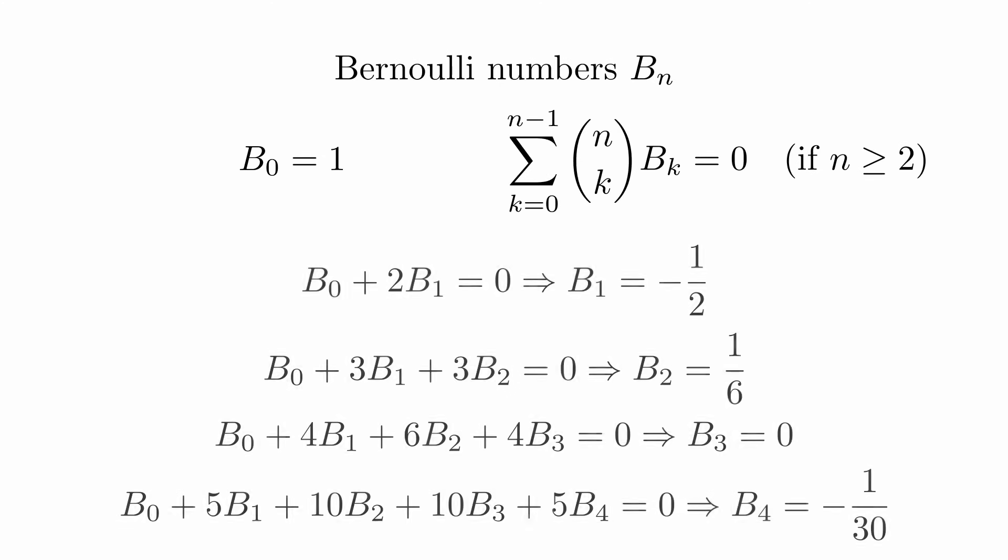For example, we get that the zeroth Bernoulli number plus two times the first Bernoulli number must be zero. So the first Bernoulli number is minus one half. You also get that the second Bernoulli number is one over six and the third is zero.